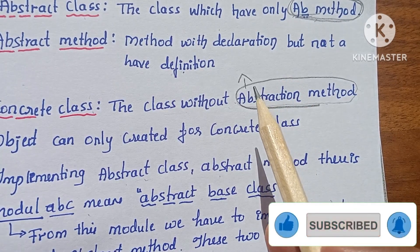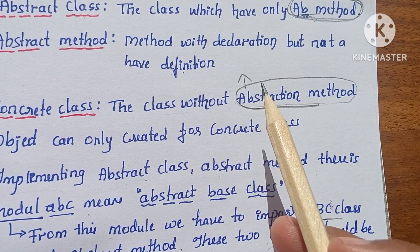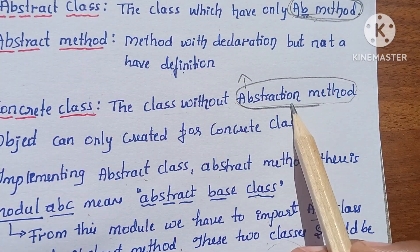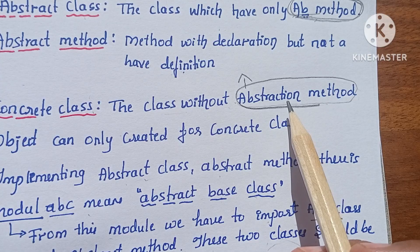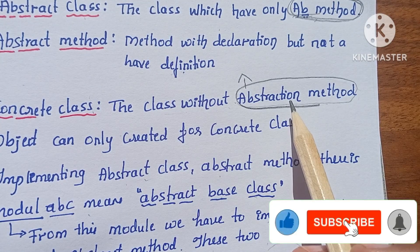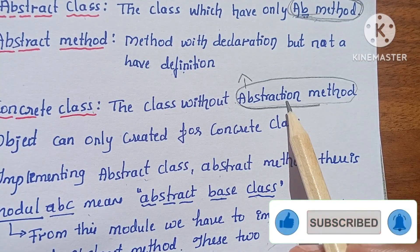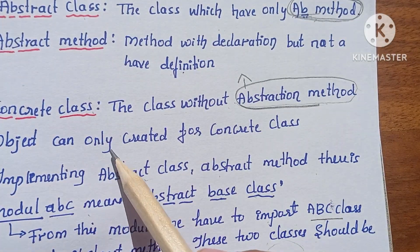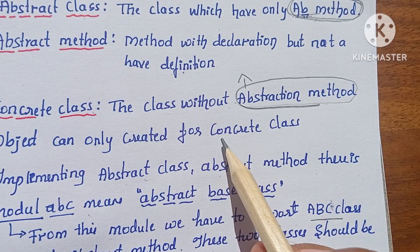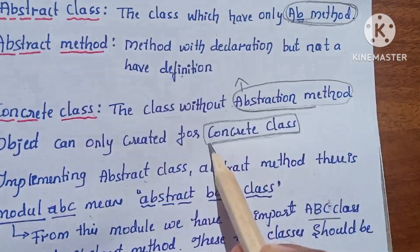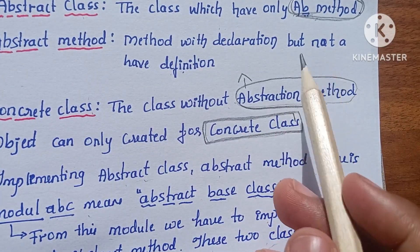Next, the object can't be created for the abstract class. Suppose if a class is abstract, the object does not get created for that class. The object can only be created for the concrete class.